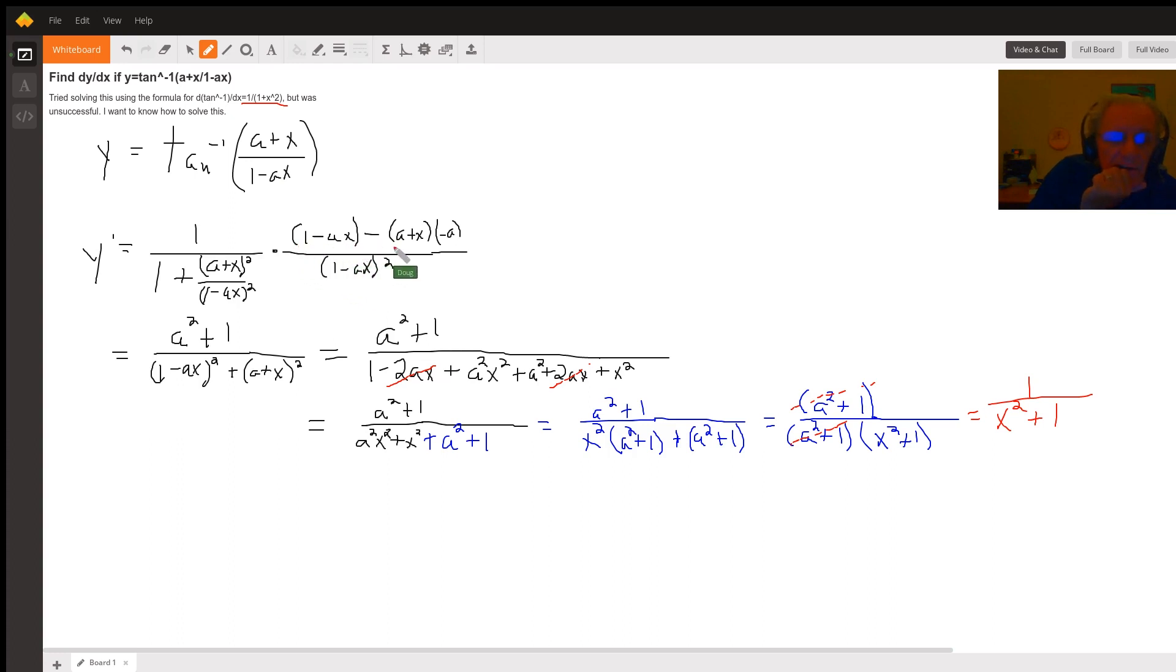I can simplify this numerator to a squared plus 1. I'll let the viewer take care of that part. And now here I'm distributing this denominator, 1 minus ax squared, times the term of this denominator. So I get 1 minus ax the quantity squared. And then when I multiply this denominator times here, these cancel out. So I get a plus x the quantity squared.